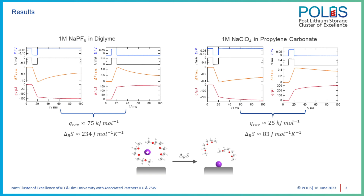When we consider the heat effects from ion transport during the reaction, these values of the reversible exchanged heat correspond to a reaction entropy change of 234 J per mole per Kelvin for sodium deposition in DME, and 83 J per mole per Kelvin for the deposition in propylene carbonate. In both systems, the entropy change during the deposition process is strongly positive, which is not expected for the immobilization of ions on an electrode surface. However, this can be explained by the influence of solvent molecules: in solution, solvent molecules form complexes with sodium ions and are fixed in the solvation shell. During deposition, these molecules are released from the solvation shell, causing an increase in entropy that outweighs the entropy loss from immobilization of sodium ions on the electrode surface.